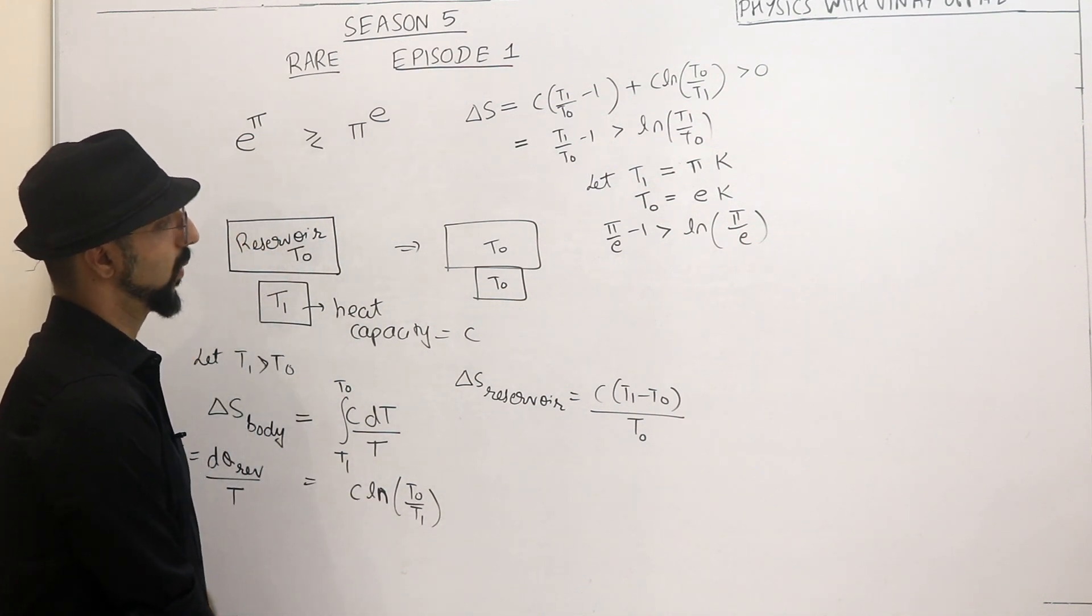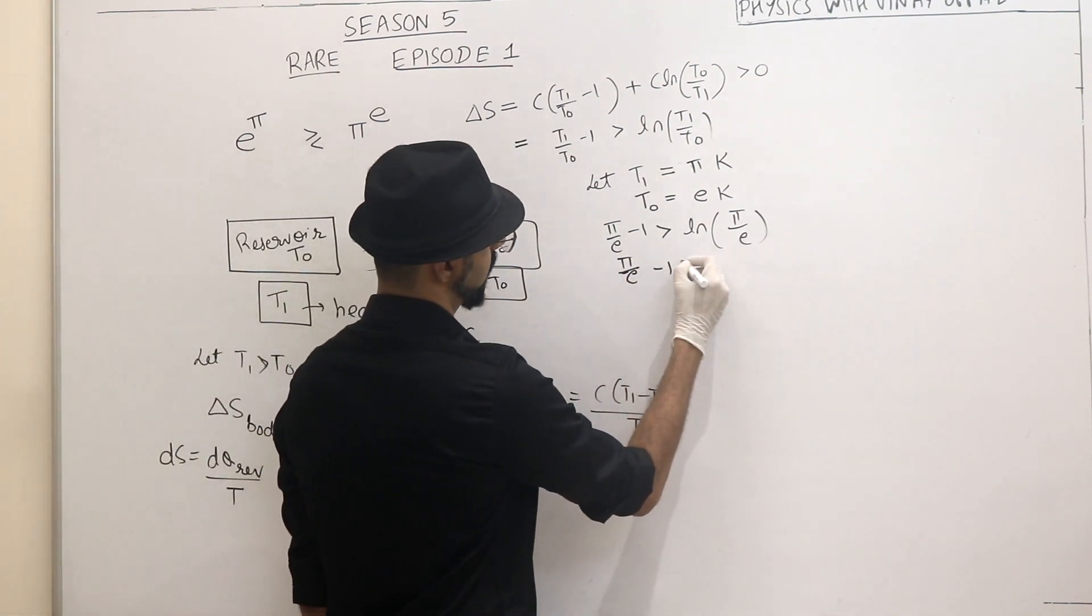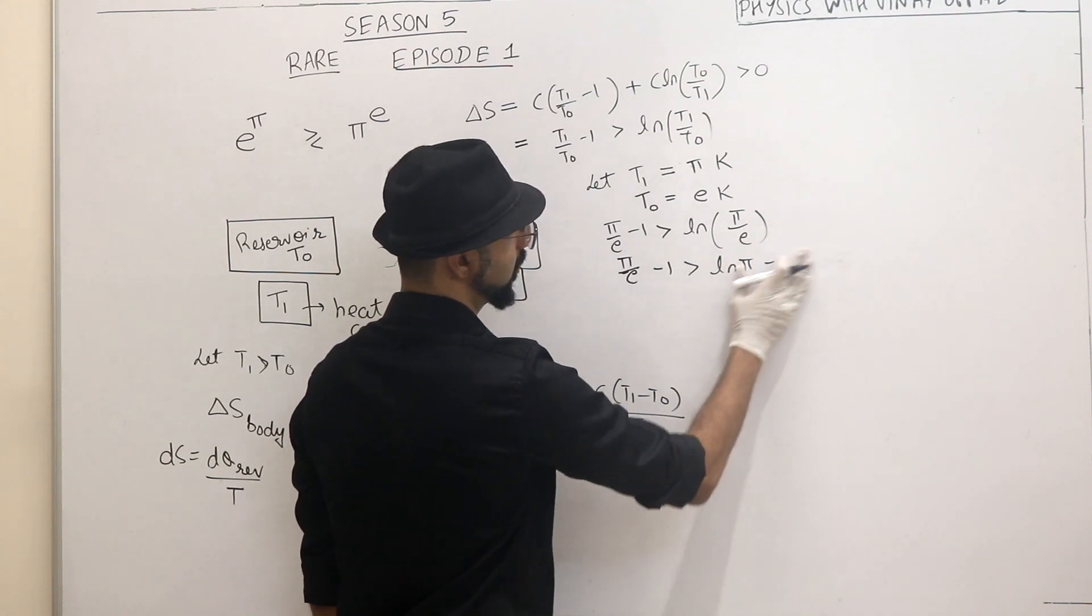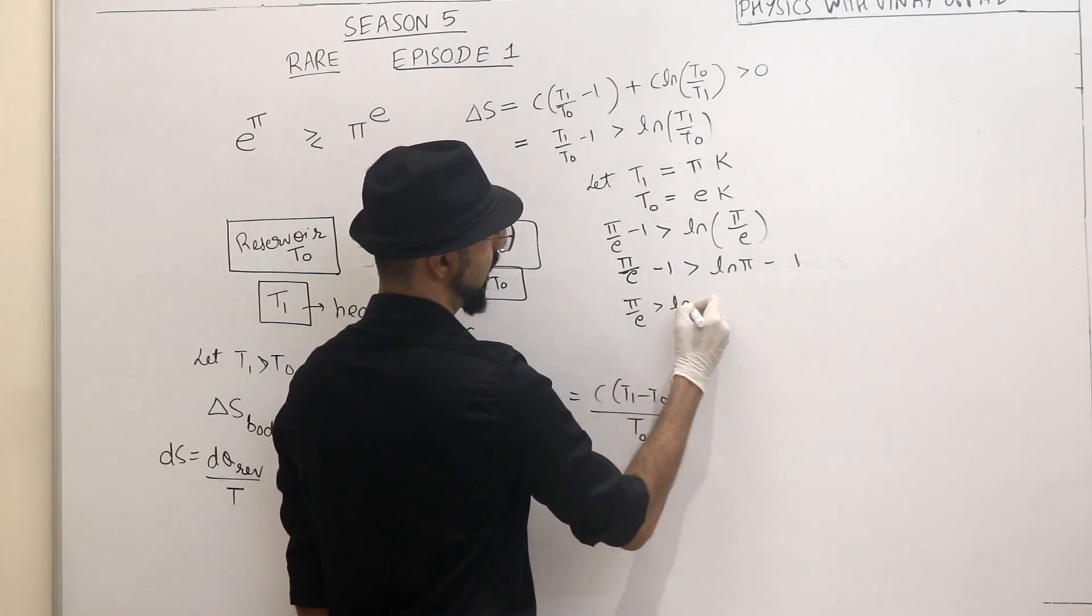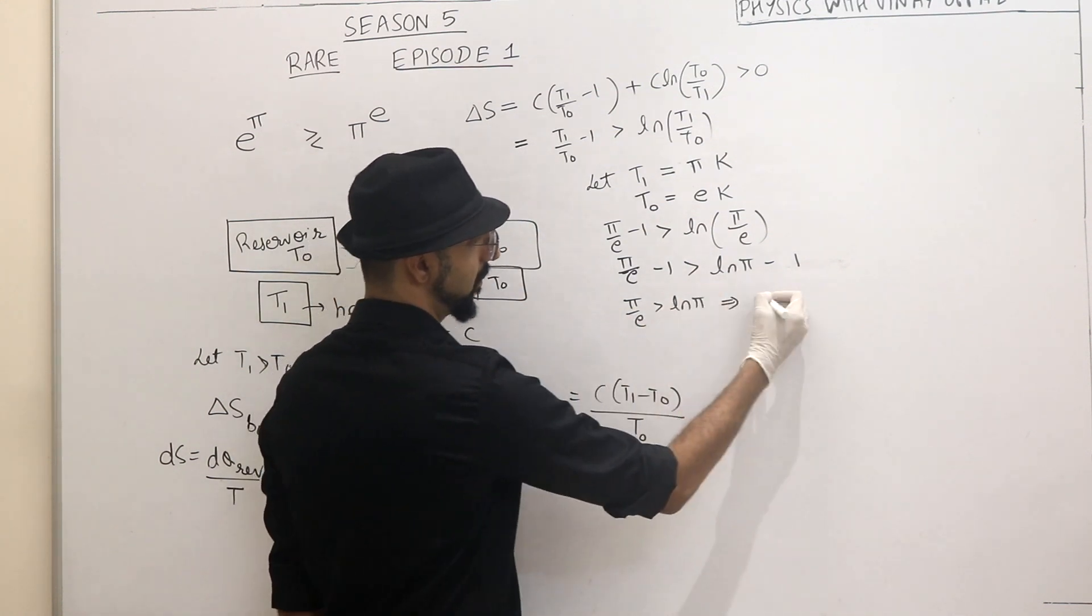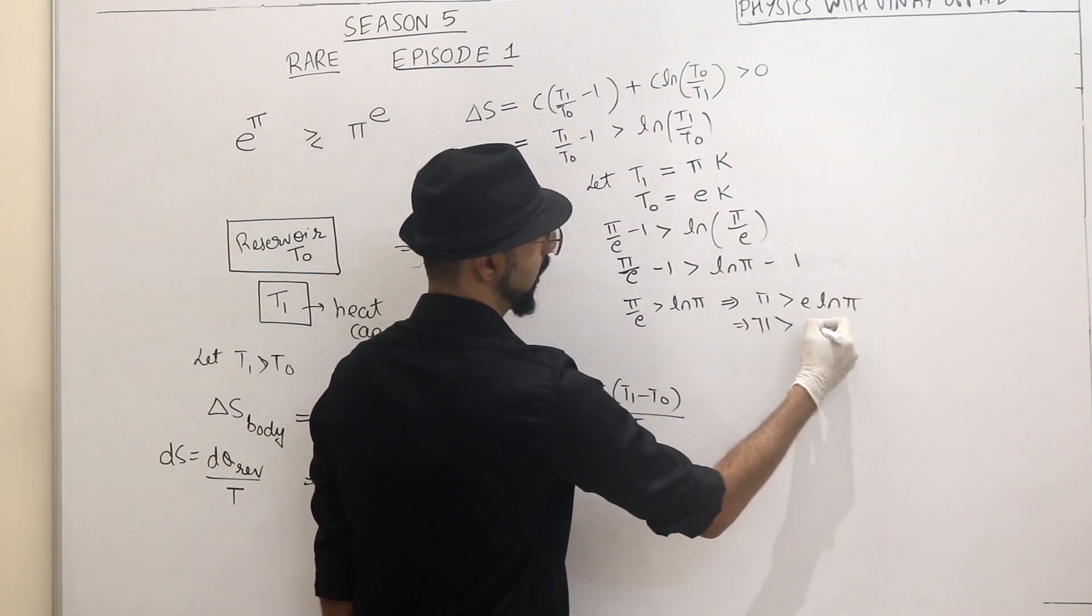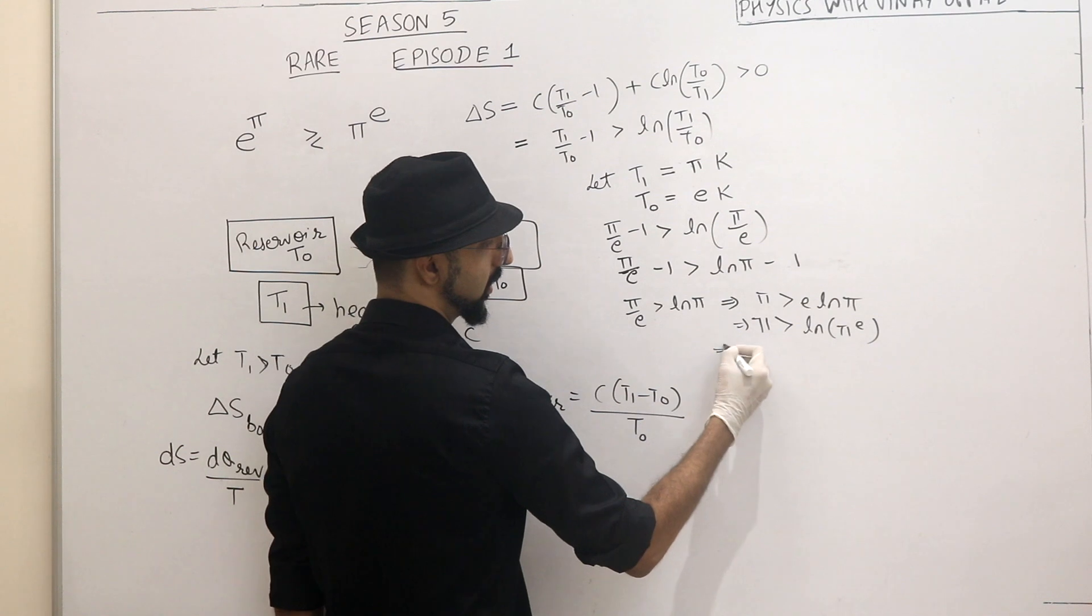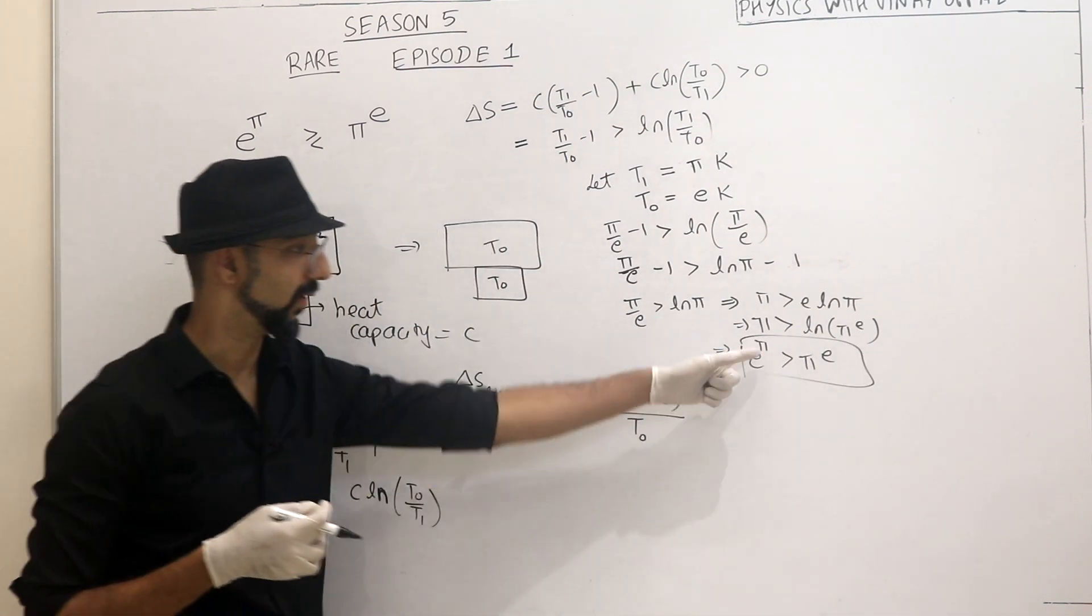Pi by E minus 1 is greater than ln of Pi by E. So pi by E minus 1 is greater than ln of Pi minus ln of E. But ln of E is 1. What do I get? Pi by E is greater than ln of Pi. Pi by E is greater than ln of Pi. What does it mean? Pi is greater than E ln of Pi. Pi is greater than ln of Pi raised to E. And we are almost there. E raised to Pi is greater than Pi raised to E. And there we have it.